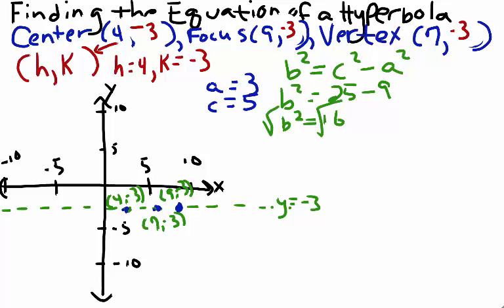Taking the square root of both sides, and since distance is positive, we'll just use our positive answer: b equals 4.